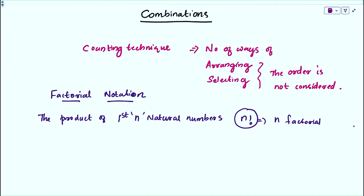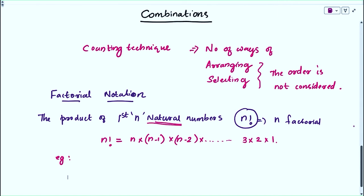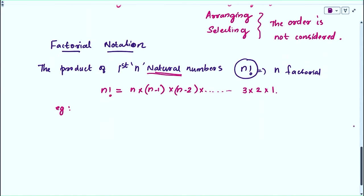We can write n factorial as: n! = n × (n−1) × (n−2) × ... × 3 × 2 × 1, because we are taking the natural numbers. For example, taking 5 factorial, we can write it as 5 × 4 × 3 × 2 × 1. On multiplying, we get the result 120.